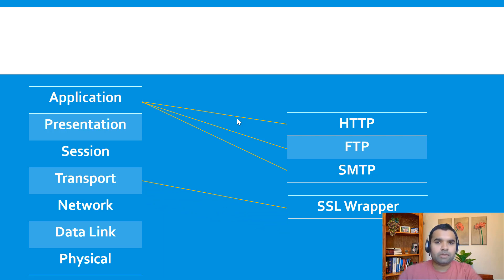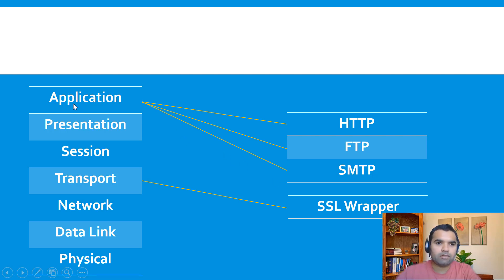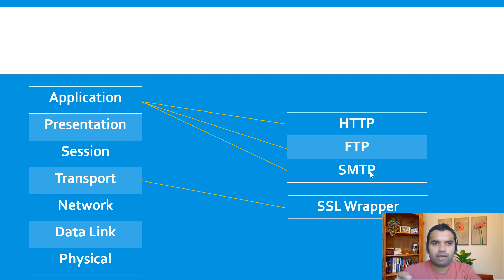For example, when the receiver is receiving information and there is a malicious actor in between performing a man-in-the-middle attack — it receives the information, it reaches the Transport layer, and there is an SSL wrapper. If the attacker is not able to decrypt that particular message, there is no way it can go to the Application layer and access the information sent via HTTP, FTP, or SMTP. That is the main reason why SSL/TLS is very important for encrypting data in transit and making sure communications stay secure throughout the channel.